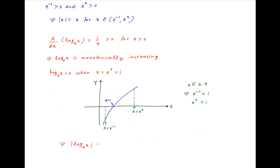Therefore, modulus of ln x is equal to plus ln x for all values of x lying between 1 and e square, and modulus of ln x is equal to minus ln x for all values of x lying between e raised to the power minus 1 and 1.